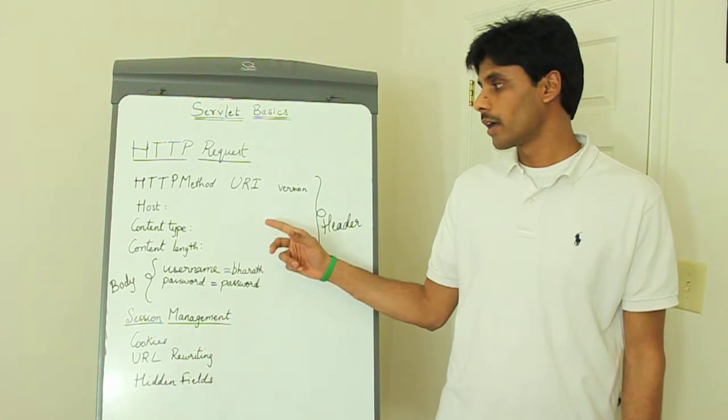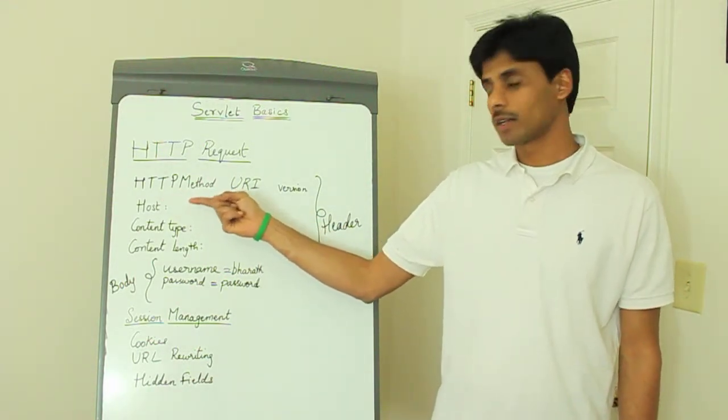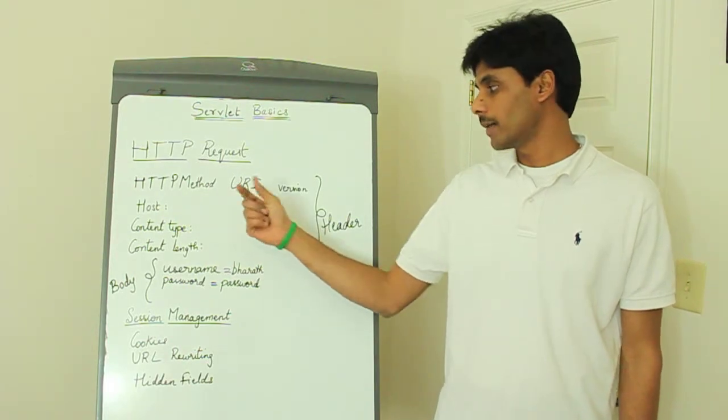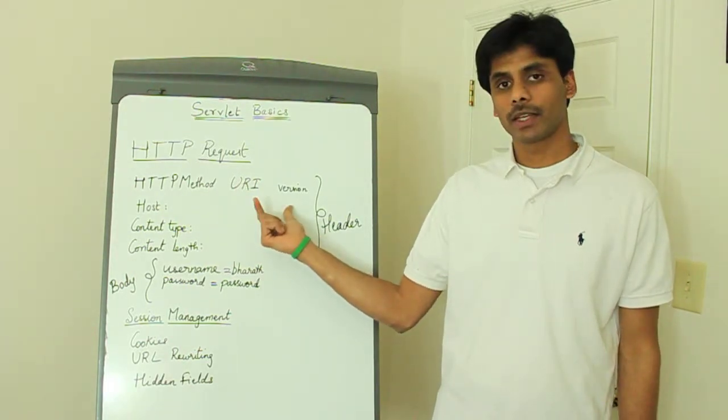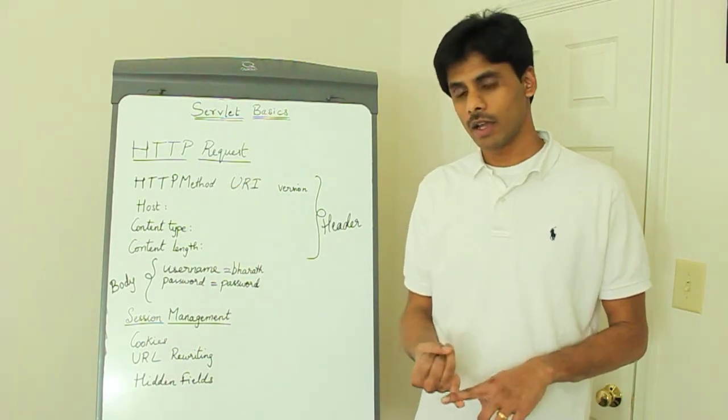The header block in turn has an HTTP method. The first line of the header block looks like this. It has an HTTP method, a URI, and a version. The HTTP method, if you remember from the last session, could be a GET or a POST.